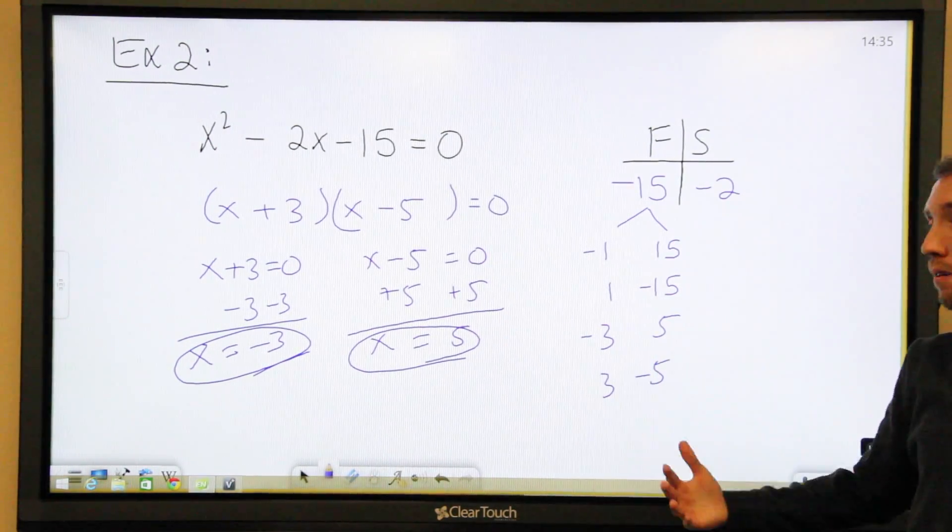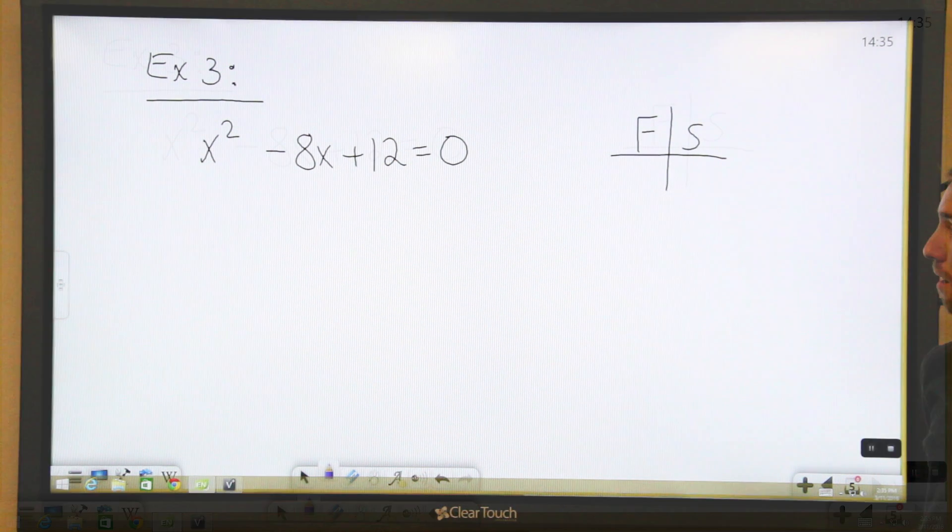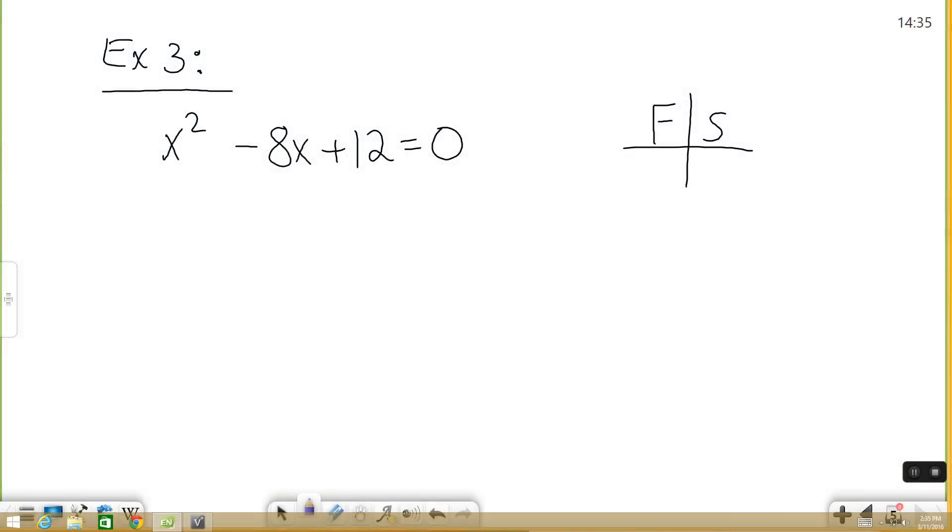Let's try one last example and then we'll see what we get. Alright, x² - 8x + 12 = 0. So we need factors of positive 12 that add up to negative 8. When I see this, I automatically think two numbers to multiply to get a positive means both of our numbers have to be positive or both of them have to be negative. Since our sum has to be negative, that means both of our factors have to be negative. That eliminates half of our answer choices.